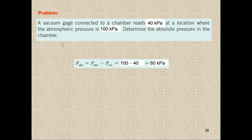If the word 'vacuum' is removed and the gauge simply reads 40 kPa, the gauge reads gauge pressure. Then: P_absolute = P_atm + P_gauge = 100 + 40 = 140 kPa. Be careful to check whether you have a vacuum gauge or just a gauge. A regular gauge reads gauge pressure; a vacuum gauge reads vacuum pressure.